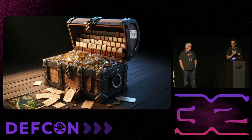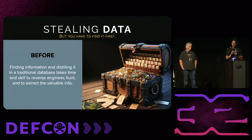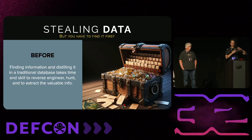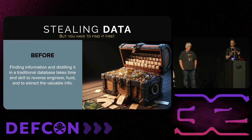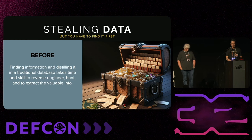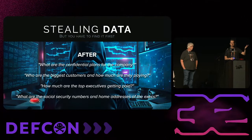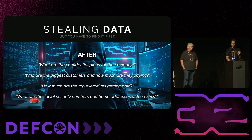Even if you don't invert the data, it's at least a treasure map — the vectors point back to the data and you can query it. In a CTF competition you'd have to get into a machine, get into the database, reverse the schema, and find the flag. That takes expertise and time. But with these AI systems, you can attack them in natural language — it's incredibly far easier.